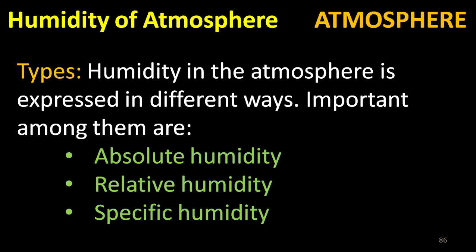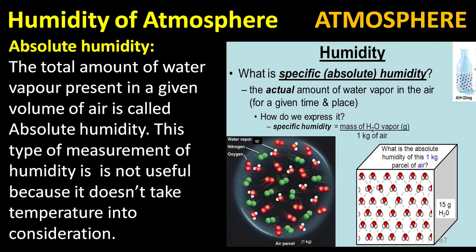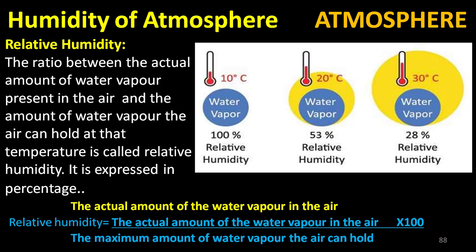Humidity in the atmosphere is expressed in different ways. The important types are absolute humidity, relative humidity, and specific humidity. Absolute humidity: the total amount of water vapor present in a given volume of air is called absolute humidity.